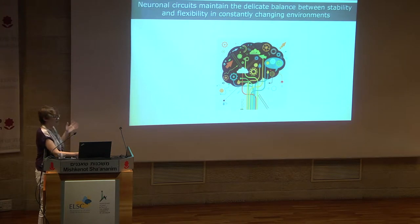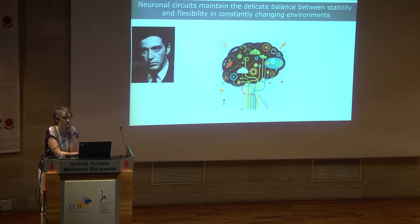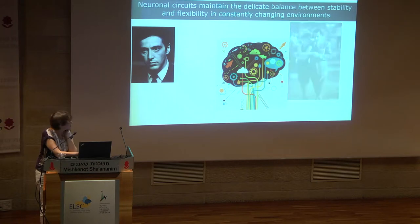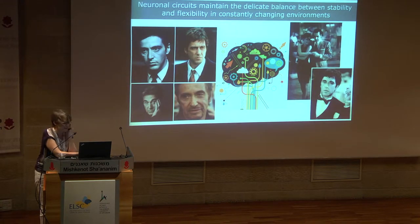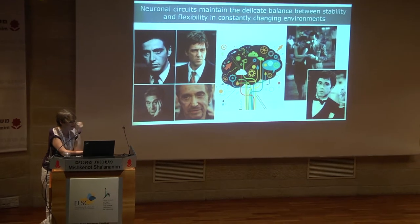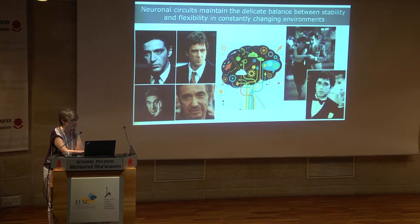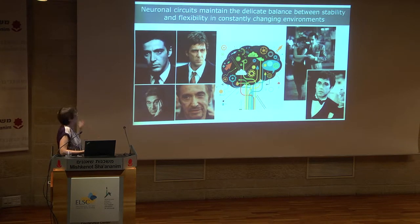This is really a non-trivial task. For example, when all of you first saw the face of Al Pacino, circuits in visual cortex built a representation of his face. However, when you see his face in a different appearance you can still recognize him. These circuits must adapt to changes in the actor's appearance, and the question is how does it happen and how do our circuits perform this non-trivial task.